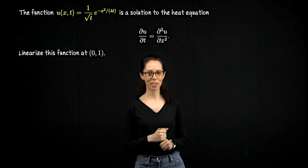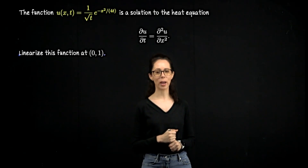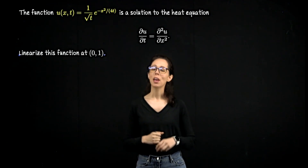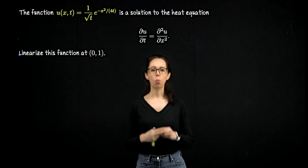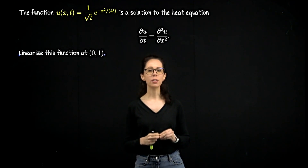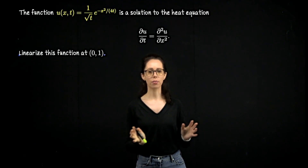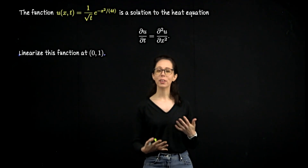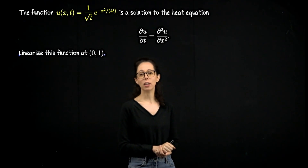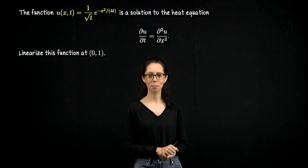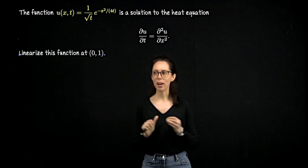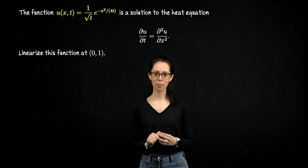Let's do an example of linearization in multivariable calculus. Consider this function: u of x and t is one over the square root of t, times e to the negative x squared over 4t. This function arises in the study of the heat equation. What we would like to do is linearize this function at the point (0, 1).